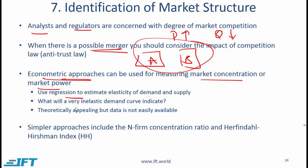Simplistically, if we determine that the demand curve is very inelastic, then that would imply that the firms in this particular industry have a lot of pricing power — they can raise prices and not lose sales, or not lose too much on sales. But the problem with econometric models is that the data is not easy to come by. Just recognize that these approaches exist, but they are very difficult because the data is hard to find.